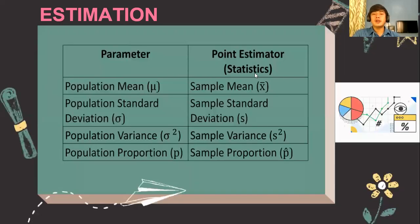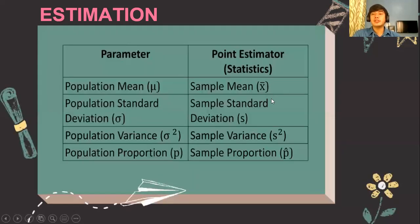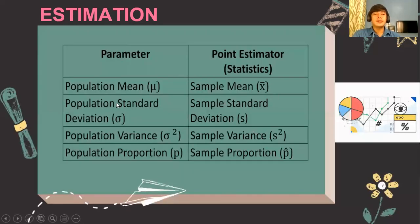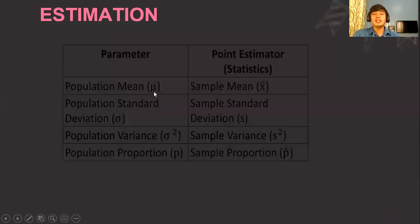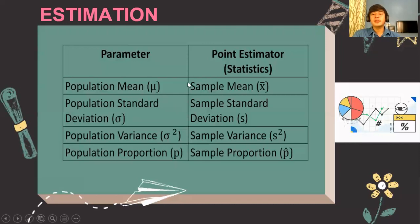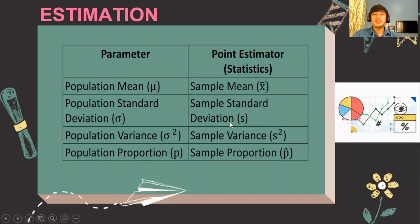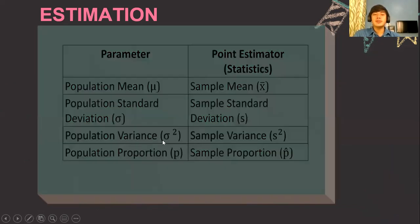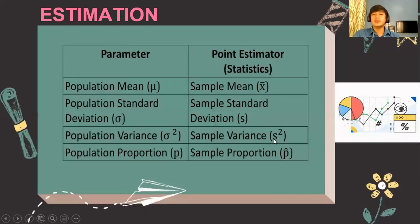These are the measurements for a parameter versus a point estimator in statistics. For the population mean, we use the Greek letter mu; but as the point estimator of the mean, we use X-bar. For the population standard deviation, we use sigma, while for the sample standard deviation, we use the small letter S. For population variance, we have sigma squared, and for sample variance, we have S squared. For the population proportion, we are represented by P.